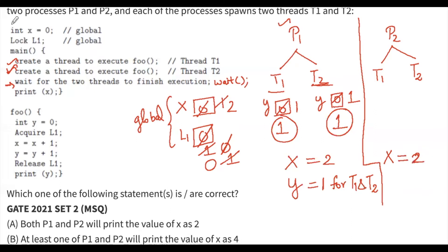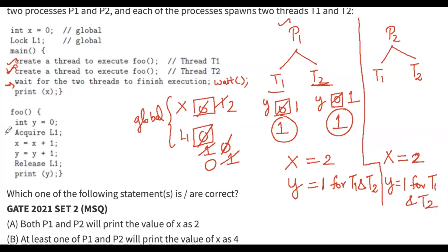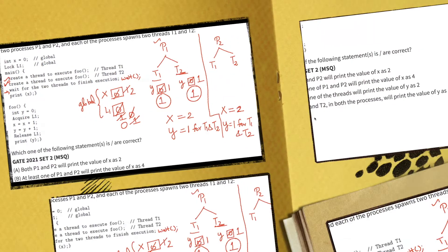For Process 2, x is initialized to 0 and the same procedure continues, so x value will become 2 and y value will be 1 for both T1 and T2. Let's see which options match these results.